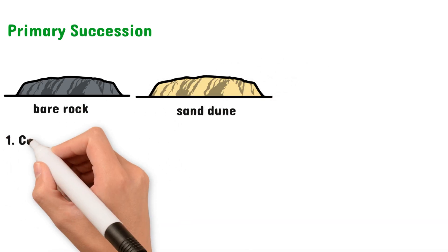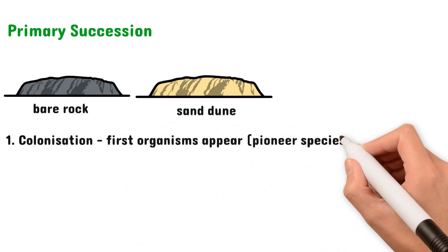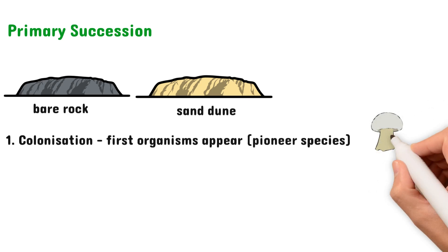The first stage is colonization. In this stage the first organisms appear. They're known as pioneer species. Examples could include fungi, moss and algae. They're able to penetrate rock and break the rock into smaller particles.